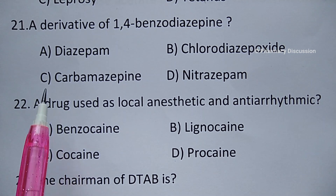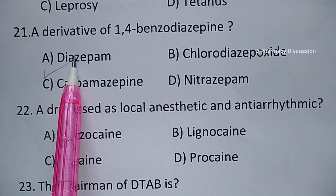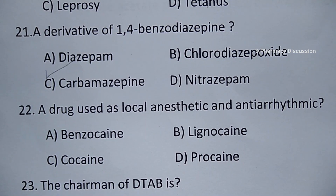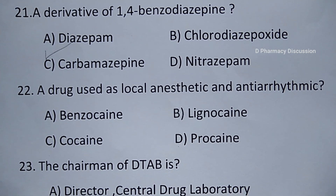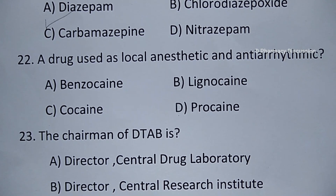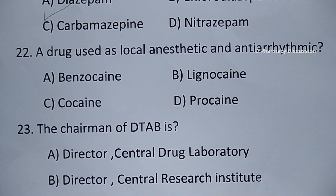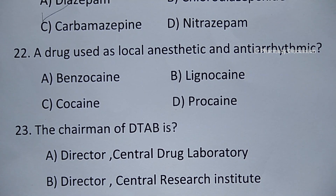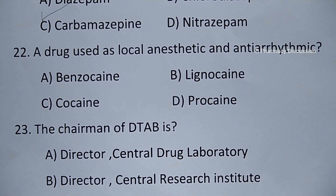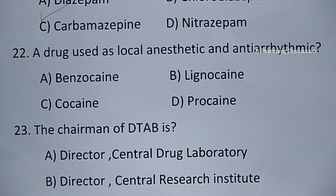Question number 21: a derivative of 1,4-benzodiazepine. Options are A. Diazepam, B. Chlordiazepoxide, C. Carbamazepine, and option D. Nitrazepam. Correct answer is option A, Diazepam. Question number 22: a drug used as local anesthetic and antiarrhythmic. Option A. Benzocaine, B. Lignocaine, C. Cocaine, and option D. Procaine. Correct answer is option B, Lignocaine.